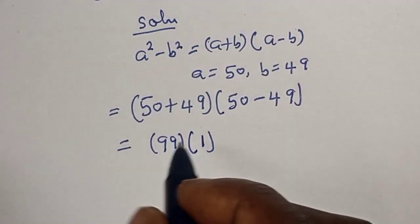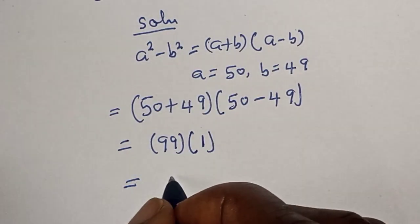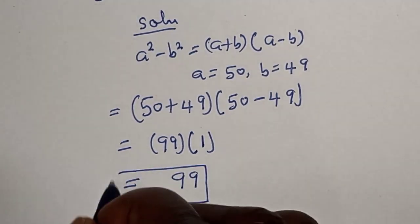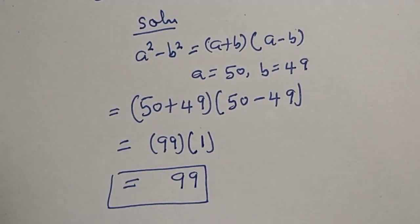And if you multiply 99 times 1, is equal to 99. And this is our final answer.